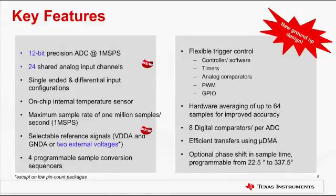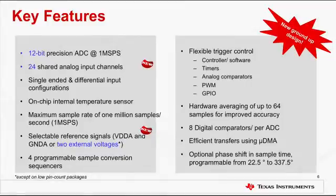Each ADC module is capable of sampling at 1 mega samples per second. To achieve higher sampling rates, two ADC modules can be configured to capture analog signals simultaneously for interleaved operation. This is a new ground-up design that features selectable reference signals for ADC. That is, the ADC reference voltages can be provided internally from within the chip or externally from the regulated power supply.